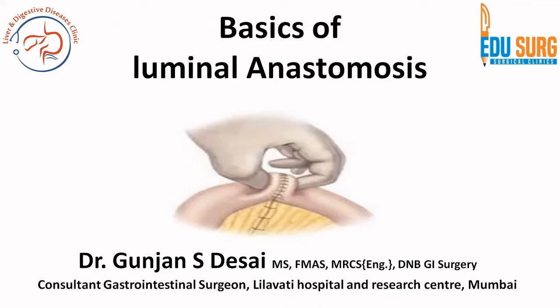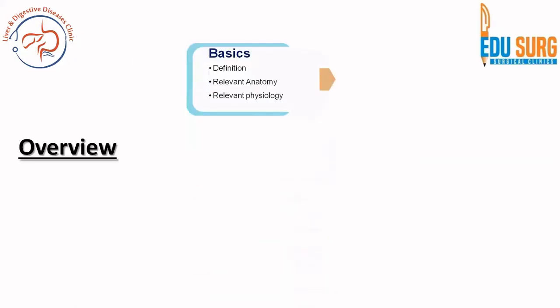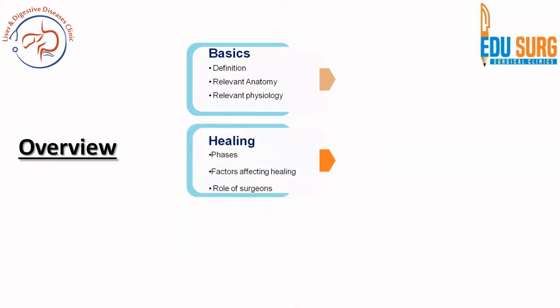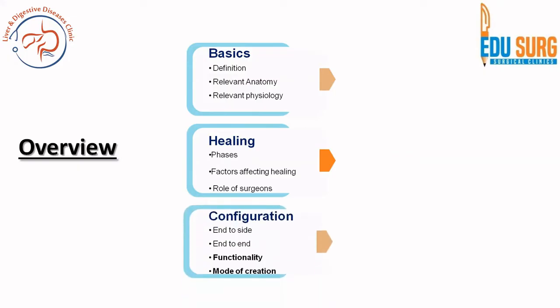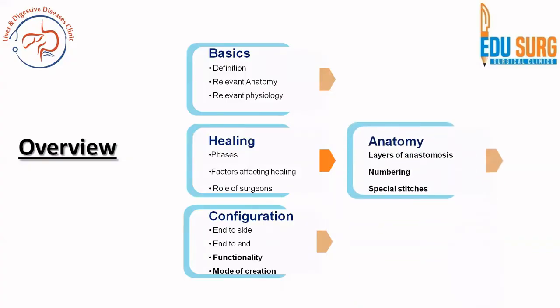This photo on the slide is basically checking the patency of the anastomosis. For our overview, we are going to see the basics of anastomosis — the definition, the relevant anatomy and physiology of intestinal anastomosis healing. We will see the phases of healing and factors that affect it, then the configuration of anastomosis which can be end-to-end or end-to-side, classification based on functionality and mode of creation, and lastly the layers of the anastomosis.